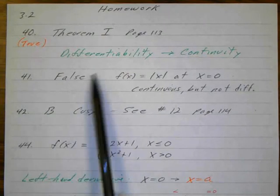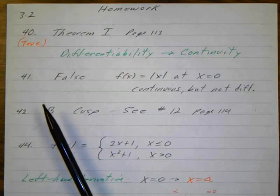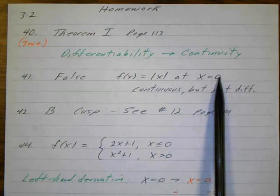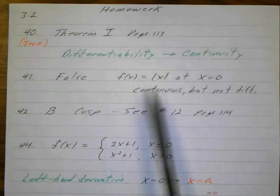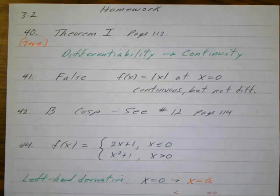Well, this is false. In order to prove any statement false, you just have to state a counterexample. And what's our good counterexample? Absolute value of x. The absolute value of x at x equals 0, that's where we have a corner. That's continuous but not differentiable because of the corner. So that's a good counterexample.